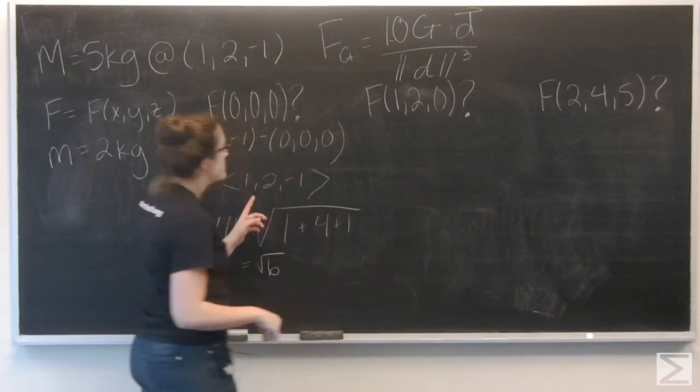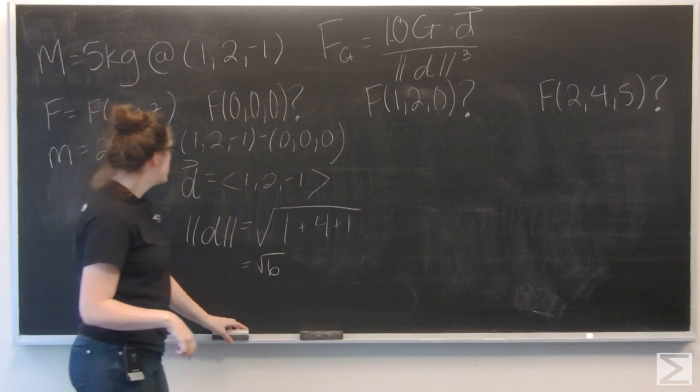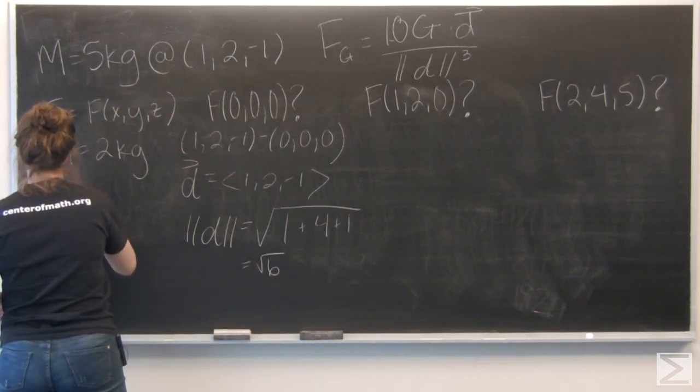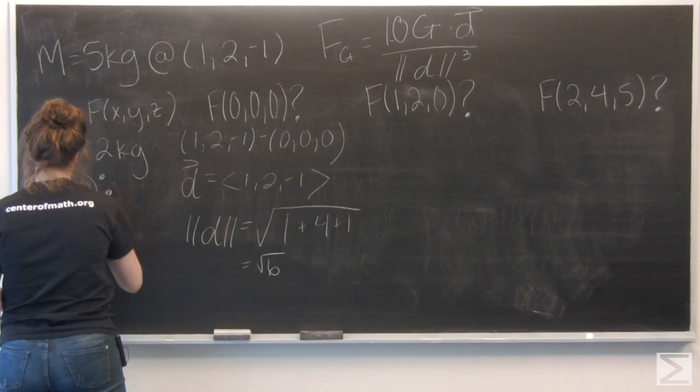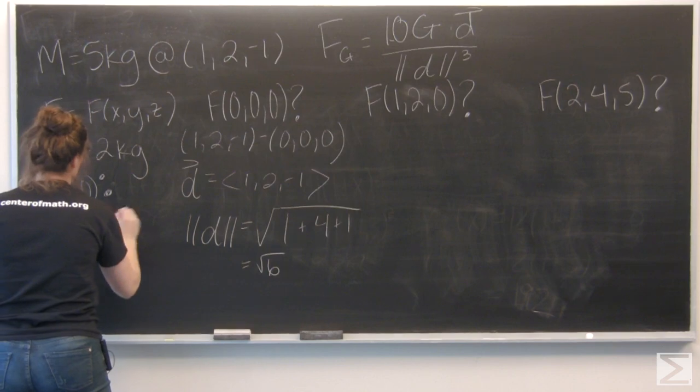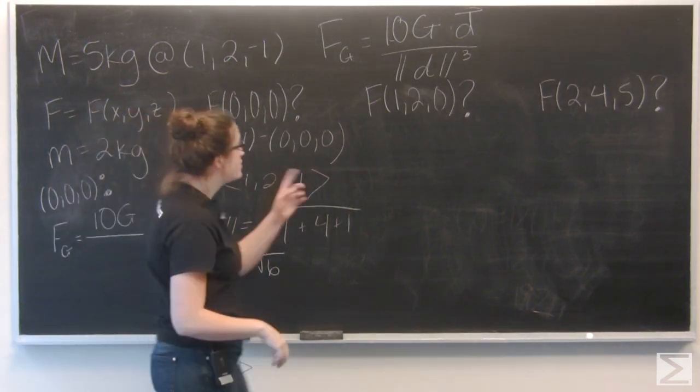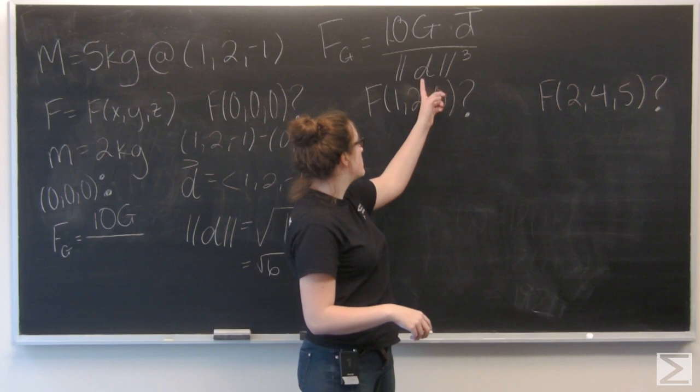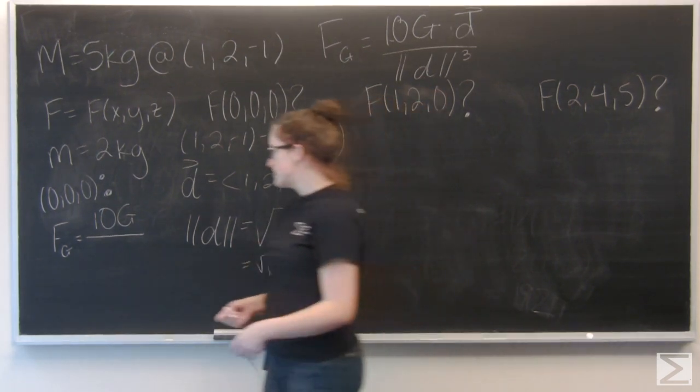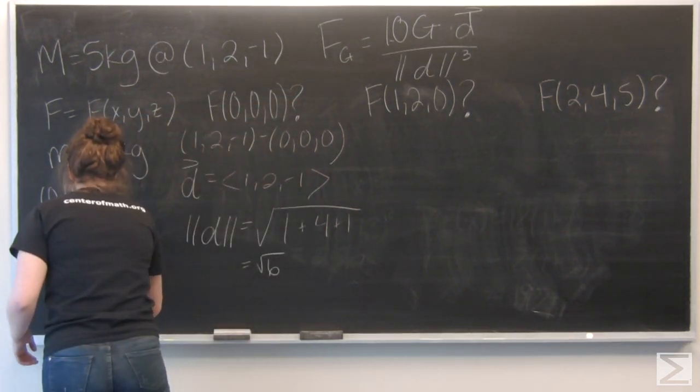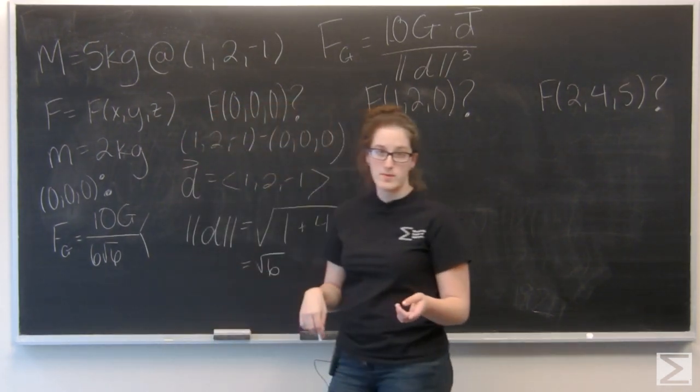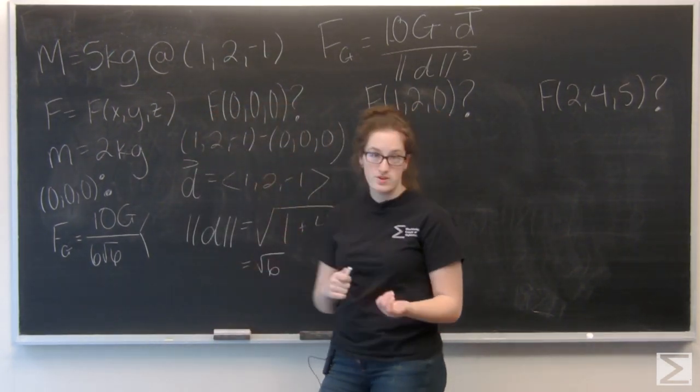And let's go ahead and plug those into that equation for F. So I have 10G over, well the magnitude cubed, the square root of 6 cubed is going to be 6 square root of 6. And then I want to multiply that by my vector (1, 2, -1).